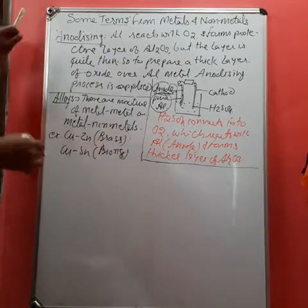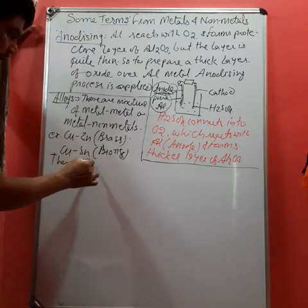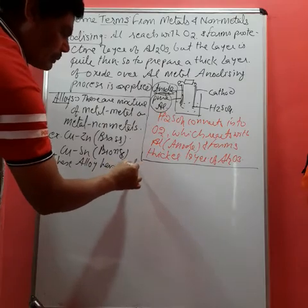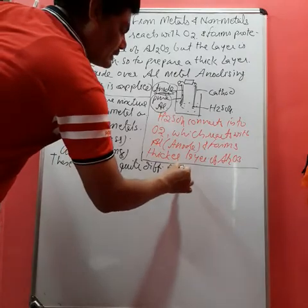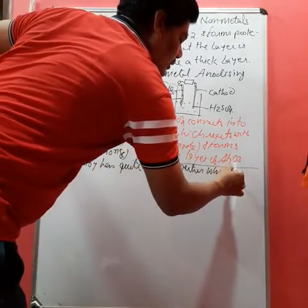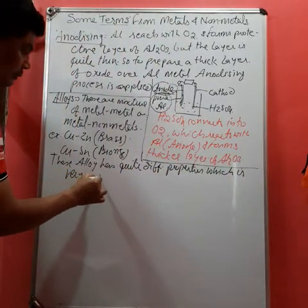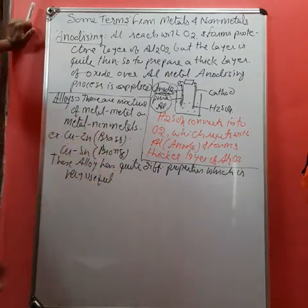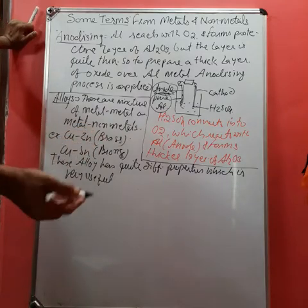These alloys have quite different properties which are very useful, like brass and bronze are used to make utensils in our kitchen.